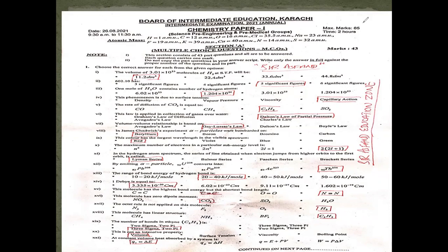The answer is 2. First, the volume of 3.01 molecules of hydrogen at STP will be determined. The key here is the number of molecules and the volume at STP. The formula is V = n × 22.4 L. We divide the number of molecules by Avogadro's number to get moles, giving 0.5 mol, then multiply by 22.4 to get 11.2 L.